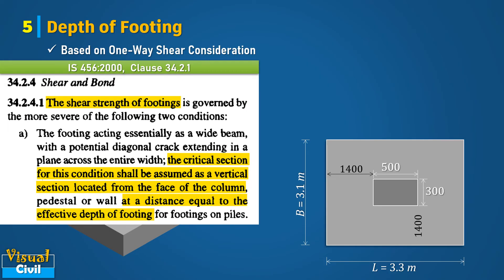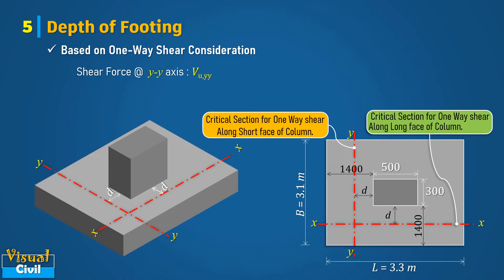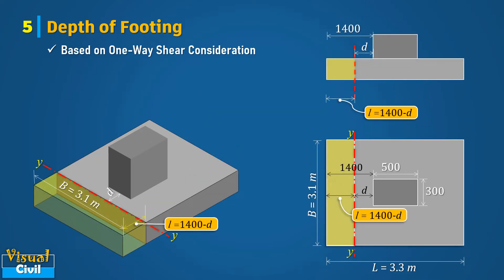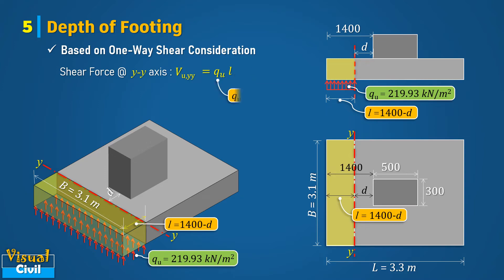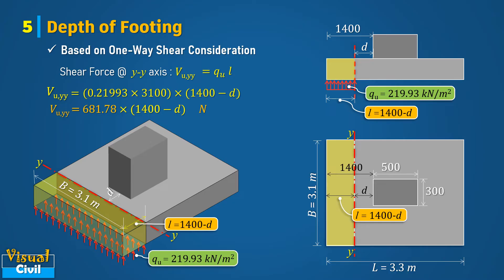Next, let us compute the depth of footing based on one-way shear consideration. As per IS code, the critical section for one-way shear is at a distance of effective depth of footing from the face of the column. Let section YY and section XX be the critical sections along the short and long faces of the column respectively. Hence, compute the shear force about YY and XX sections. Compute the shear force due to factored net upward soil pressure acting over the entire area of the footing on one side of the YY section as shown in the figure. Hence, vu YY is equal to qu into L, where L is (1400 minus d) mm. As qu is a pressure, it should be multiplied by the width of the section. After putting all values and solving, we get vu YY in terms of effective depth d.